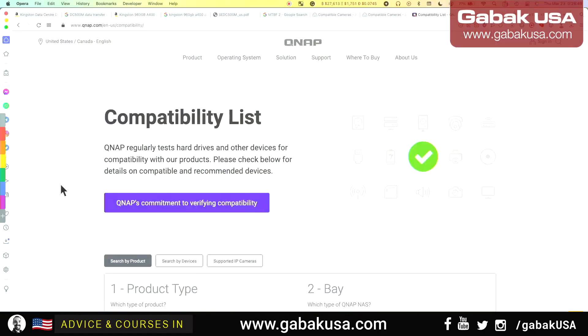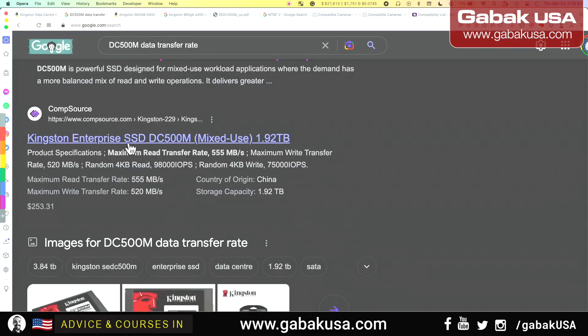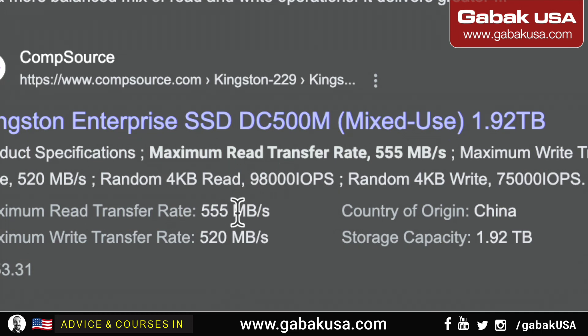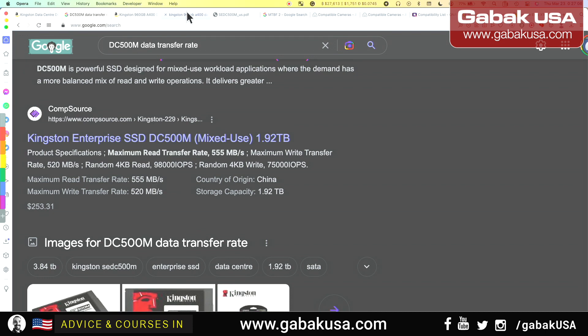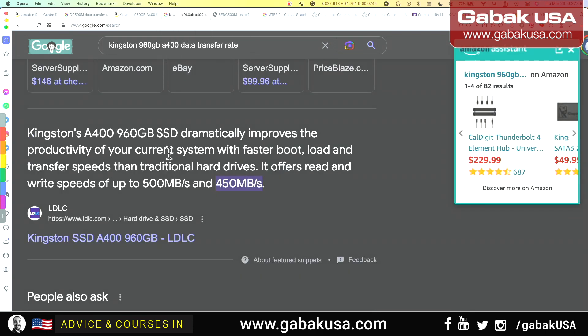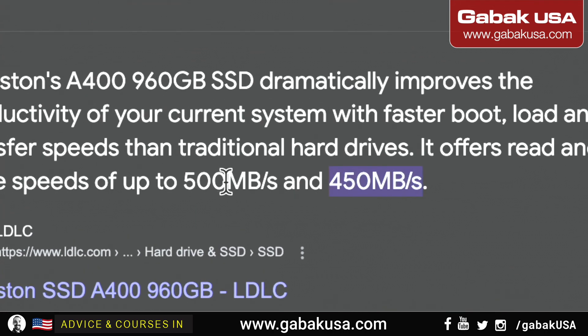These are the main differences between the two drives. The data center SSD has a read speed of 555 megabytes per second and a write speed of 520. Comparing it to the basic model, you have 500 megabytes read and 450 write — so it is slower. The latency is also not going to be as good, but it's less than half the price: $132 versus $50, almost three times less.